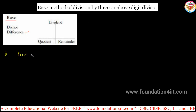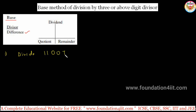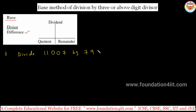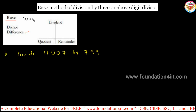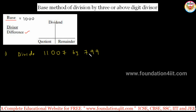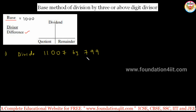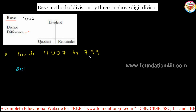Let us take one example first. Divide 11,007 by 799. Which number is the base here? It is a three-digit divisor, so the base is 1,000 — that is 1 followed by three zeros. Base equals 1,000. Now count the difference: 1,000 minus 799 equals 201. Easy calculation — from 1,000 you can subtract any number easily. So 201 is the difference.